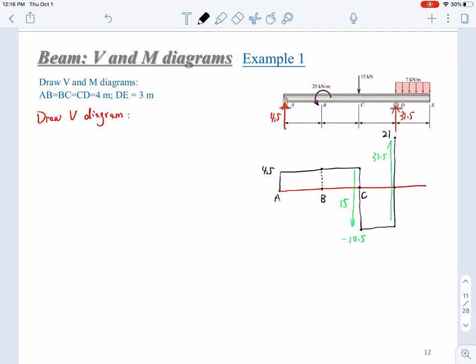And after this point, it will be a distributed load, constant distributed load, and the area is 7 times 3, that is 21. So here the value is 21, so it will be reducing from D to E, it will be reducing linearly by 21, down to zero.